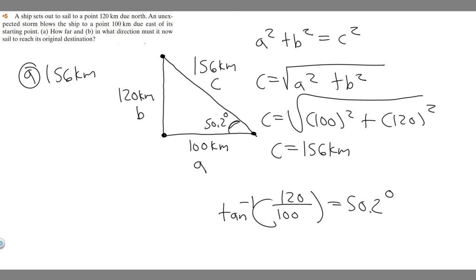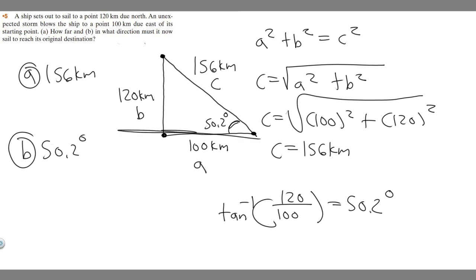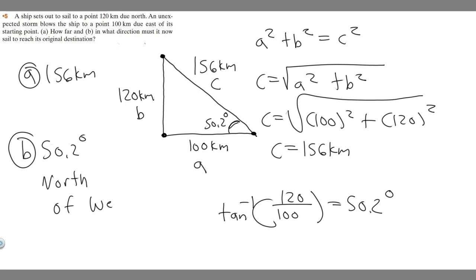So it says in what direction? Your angle is 50.2 degrees, but keep in mind where we're going. If this is north and we're going in the west direction, you would say 50.2 degrees north of west — because we're going in the north direction of the west direction. So 50.2 degrees north of west is your answer to part B. Hopefully you found this useful.